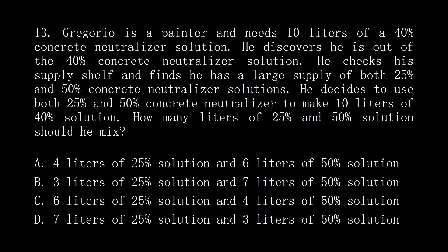Question 13: Gregorio is a painter and needs 10 liters of a 40% concrete neutralizer solution. He discovers he is out of the 40% solution. He checks his supply shelf and finds he has a large supply of both 25% and 50% concrete neutralizer solutions. He decides to use both to make 10 liters of 40% solution. How many liters of 25% and 50% solution should he mix?